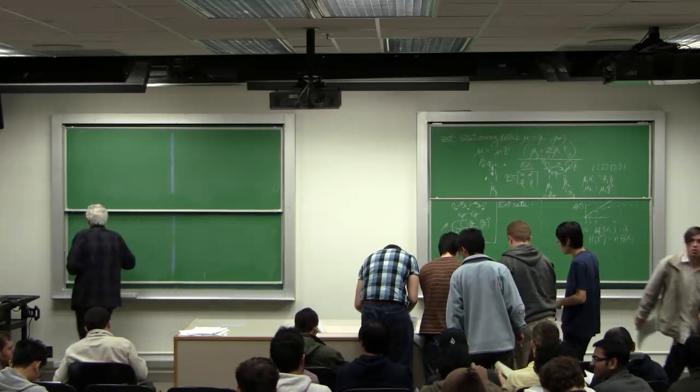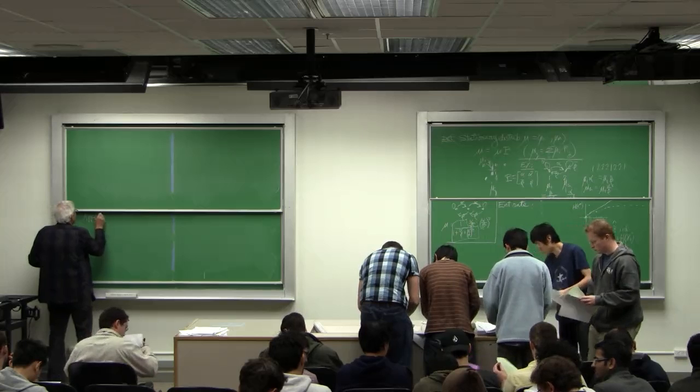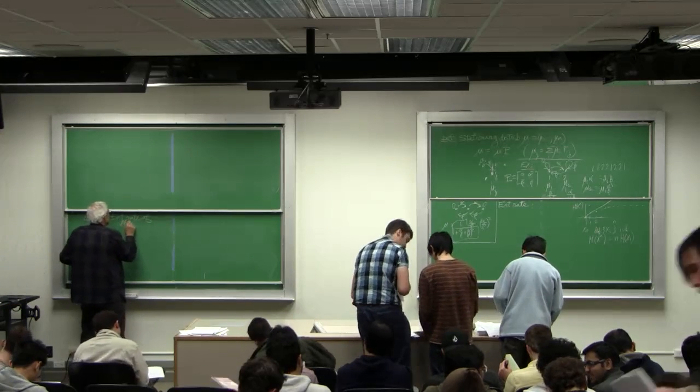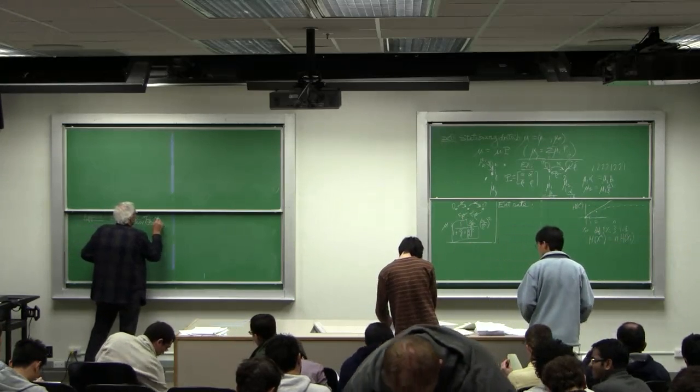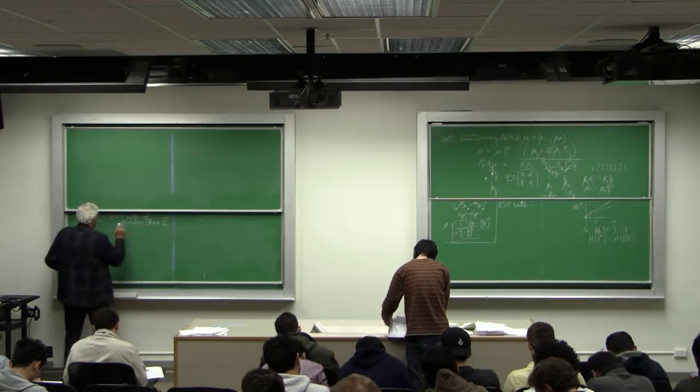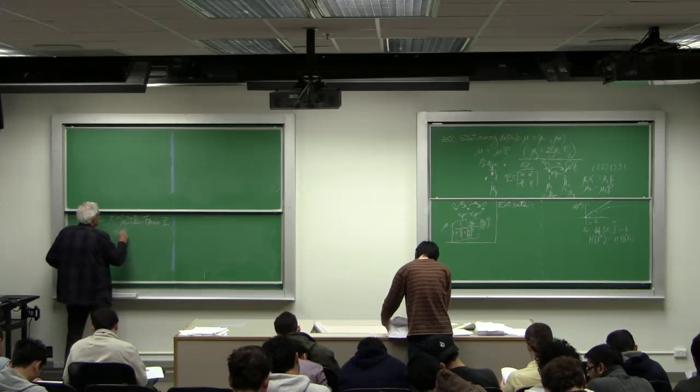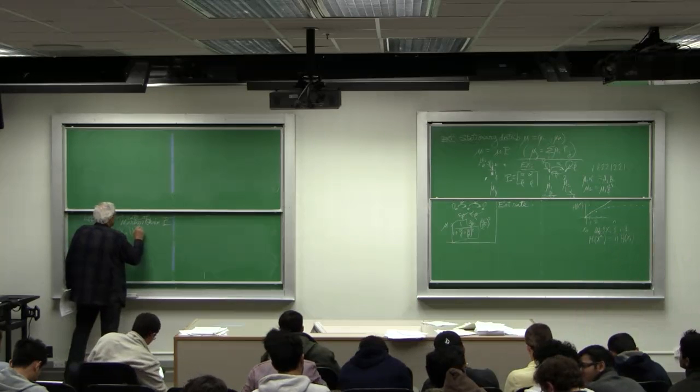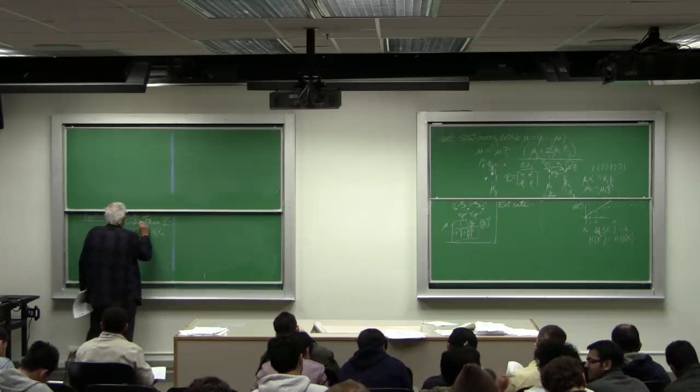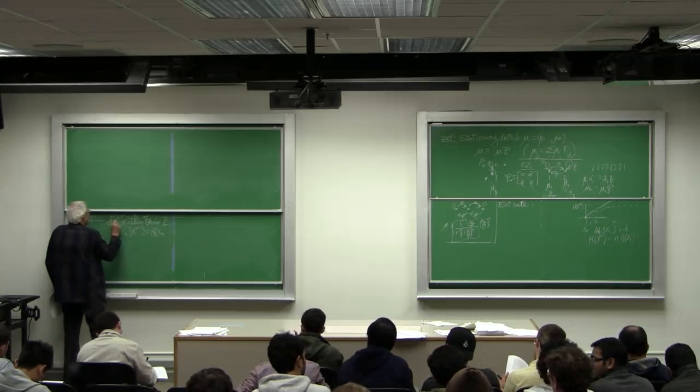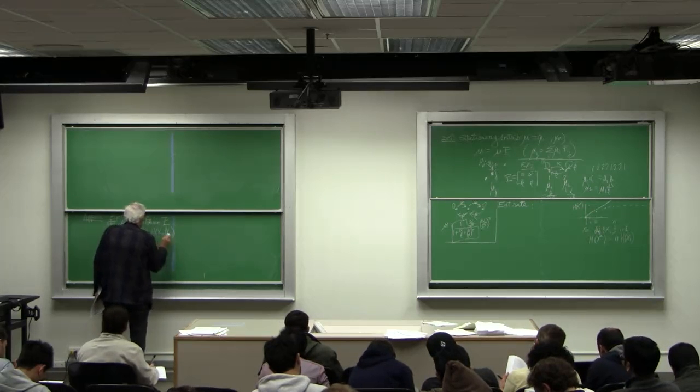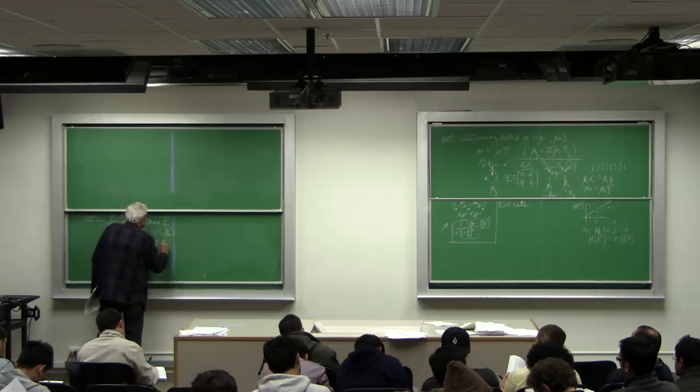Here's the first application of what we've done. The entropy rate of Markov chain with transition matrix P. And we notice that H of X_n given the past is the entropy of X_n given X_n minus 1, which by stationary is the entropy of X_2 given X_1.